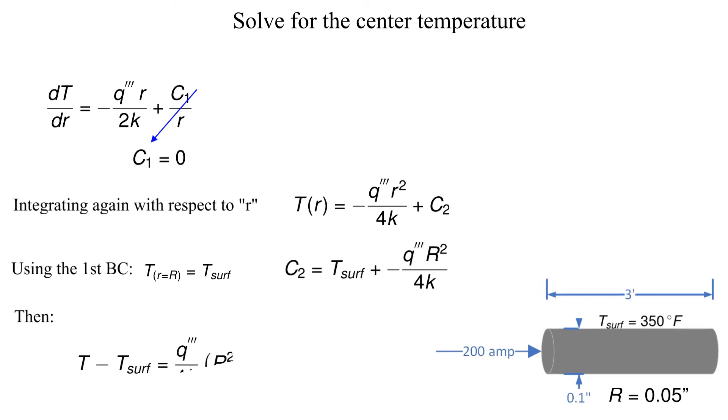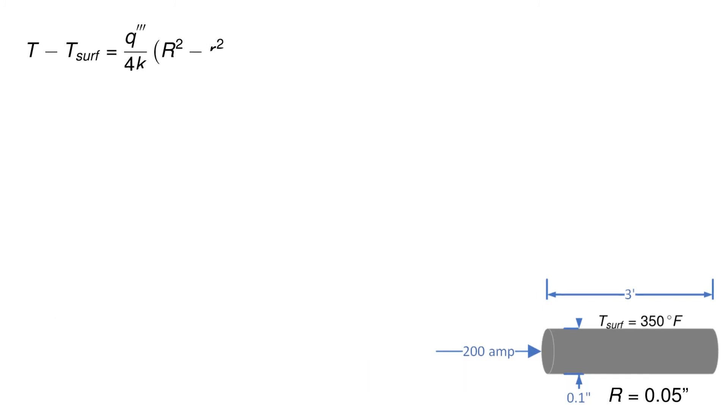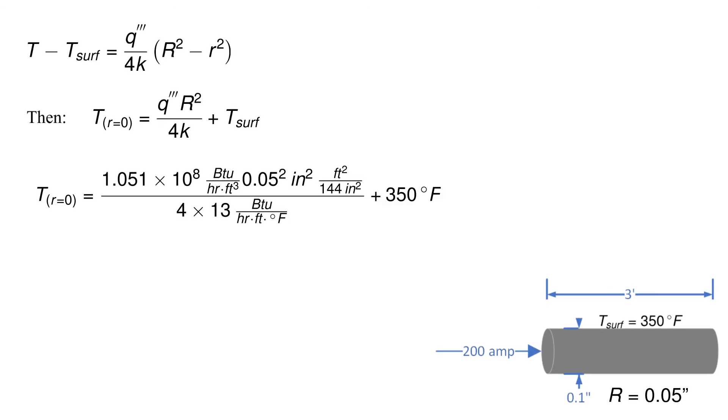Now we have an equation for the temperature as a function of radius. All that's left is to plug in the necessary values with units and solve for the temperature at radius equal to zero. The calculation with units is shown. The center temperature is 385 degrees Fahrenheit.